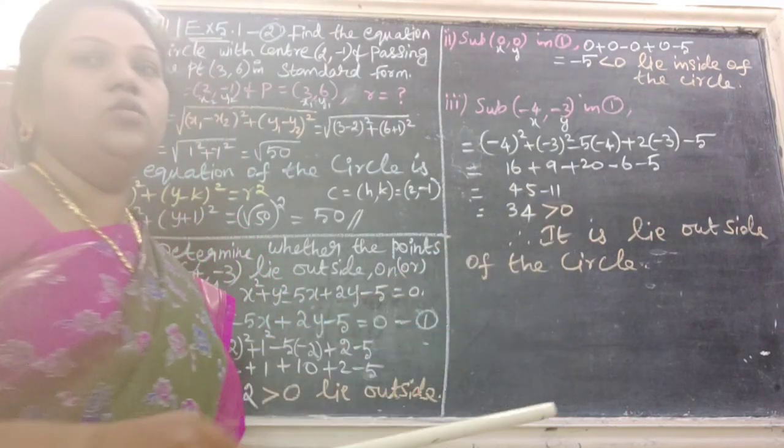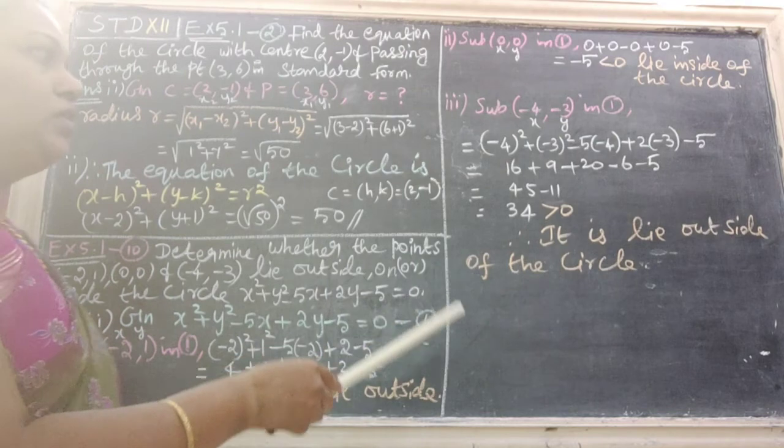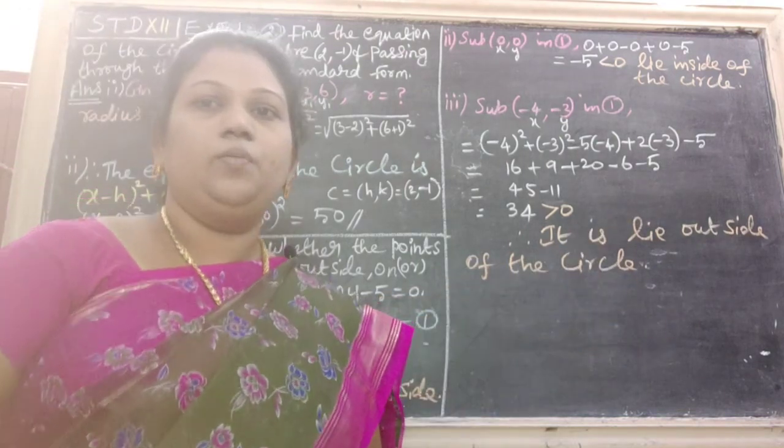Then simplifying we get 34, which is strictly greater than 0, therefore it lies outside of the circle.